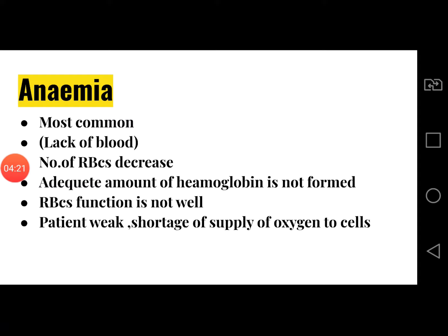Anemia is the most common disease of humans. Anemia means lack of blood — the number of red blood cells decreases, an adequate amount of hemoglobin is not formed, and RBCs do not function properly. This disease is caused by lack of iron in our body. Since hemoglobin contains iron, which is involved in the supply of oxygen and carbon dioxide, lacking iron results in shortage of RBCs, lack of hemoglobin, and the patient becomes weak due to shortage of oxygen supply to the cells.